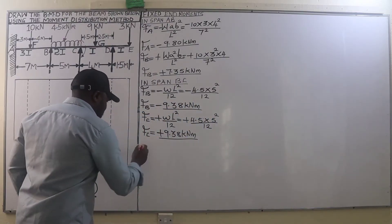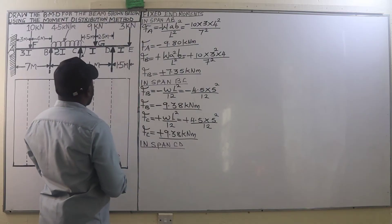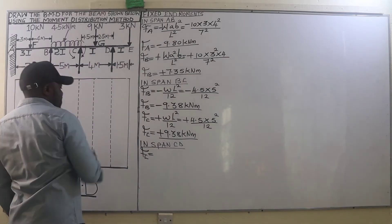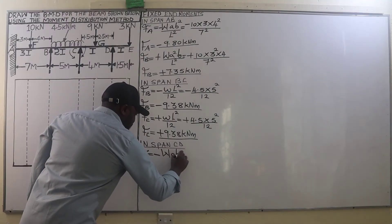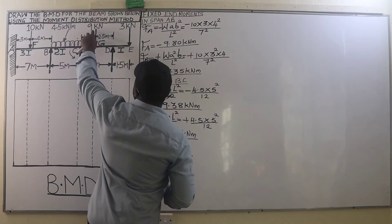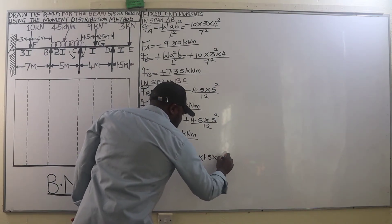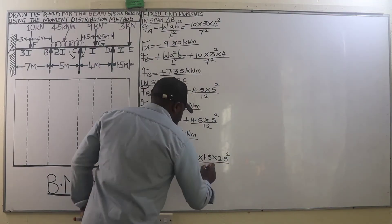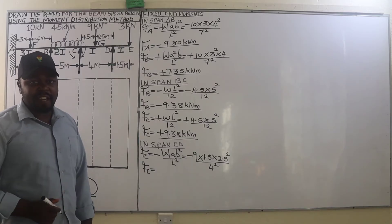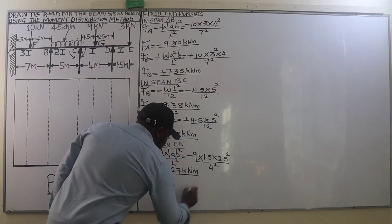Now for span CD: the fixed end moment at C is an anti-clockwise moment given by negative W·A·B² divided by L². This is negative 9 kN multiplied by A (1.5 m) multiplied by B squared (2.5 m), divided by the span squared (4 m), giving a fixed end moment at C of negative 5.27 kN·m.